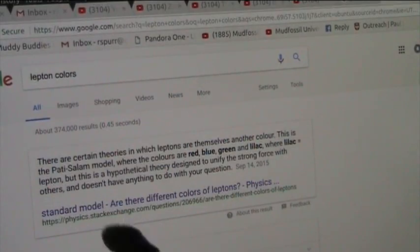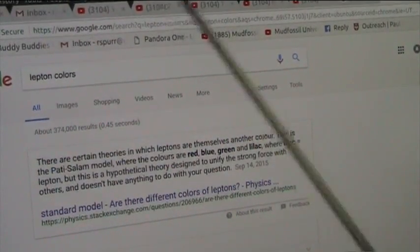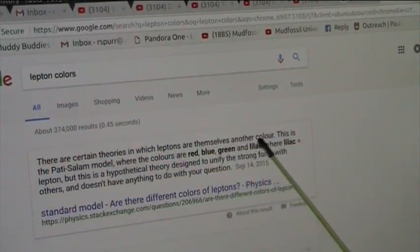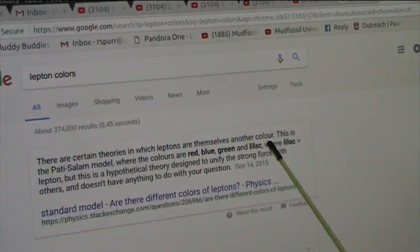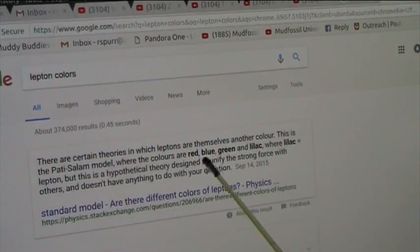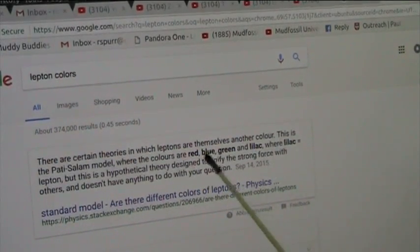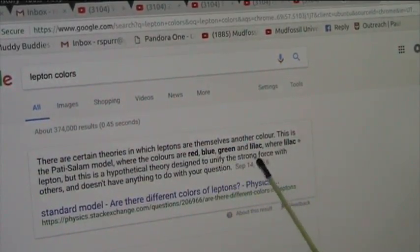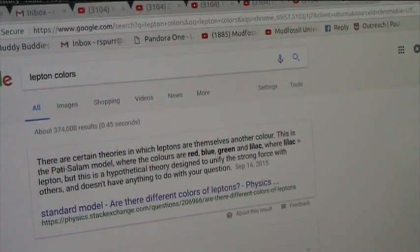Here's what it says about leptons. There are certain theories in which leptons are themselves another color. It's a Petit Salam model where colors are red, blue, green, lilac. That's the colors I'm seeing. You know, red, blue, green, lilac. But this is a hypothetical theory. And then he goes on and says it doesn't have anything to do with your question, whoever asks the question.